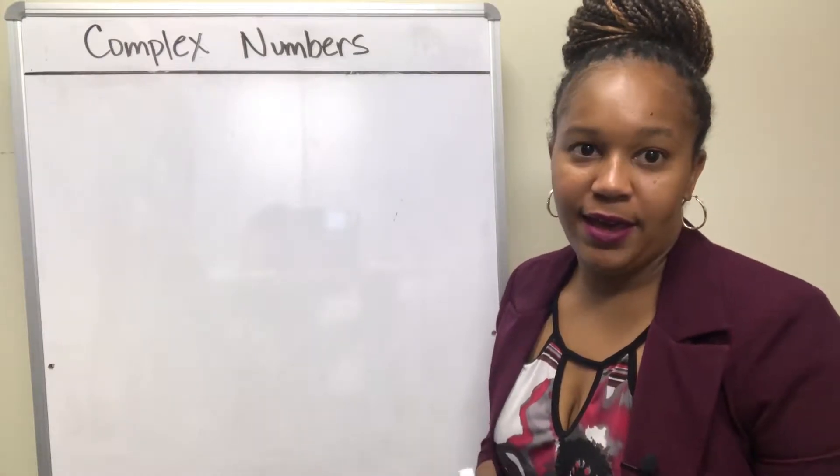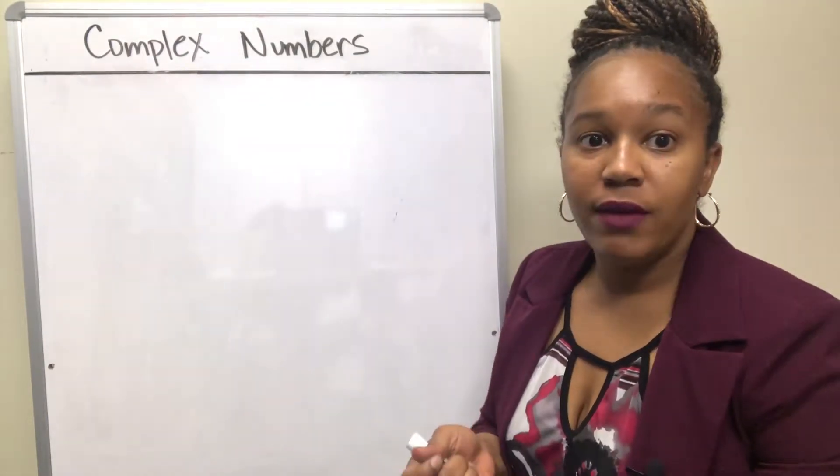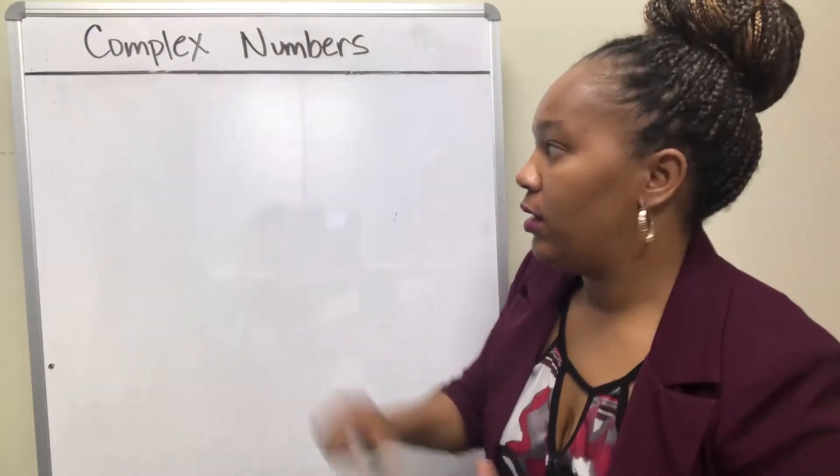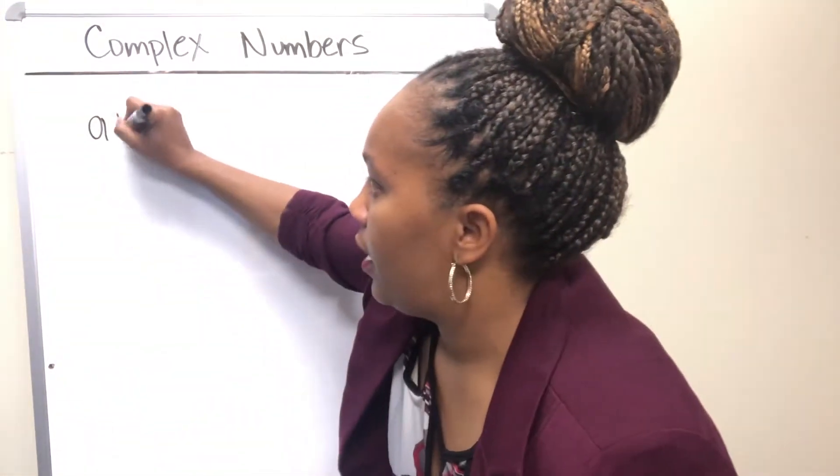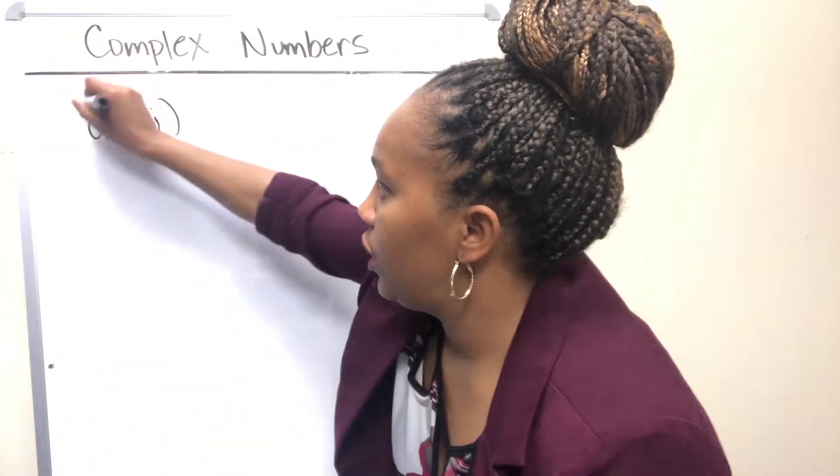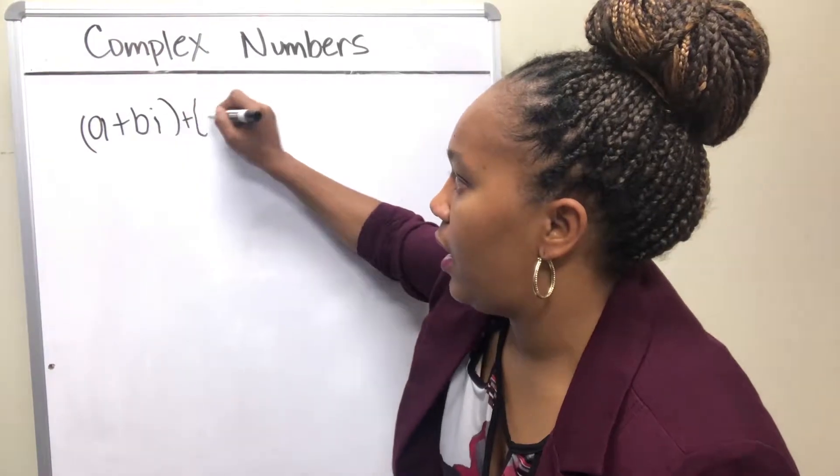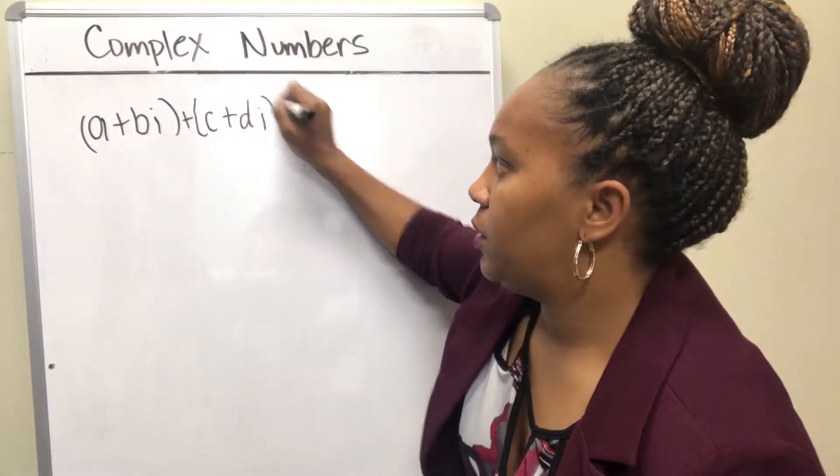Now we're going to talk about how to add complex numbers. If you have two complex numbers, how do you add them? We're going to start off with just two generic complex numbers: A plus Bi plus C plus Di.